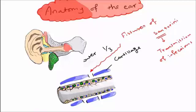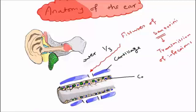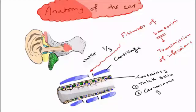The canal contains four types of cells: dermal cells giving thick skin, ceruminous cells secreting cerumin or the ear wax, sebaceous glands, and hair follicles.